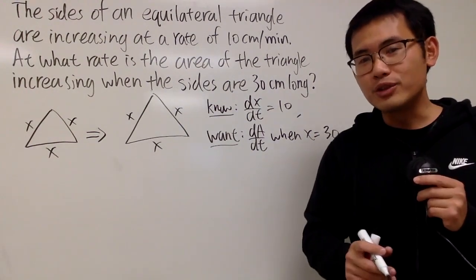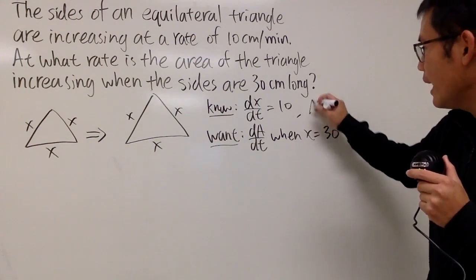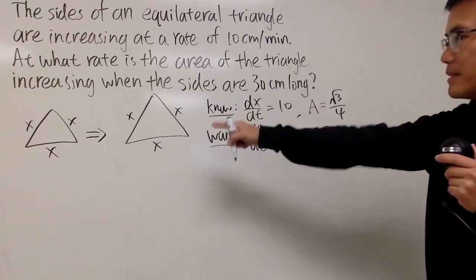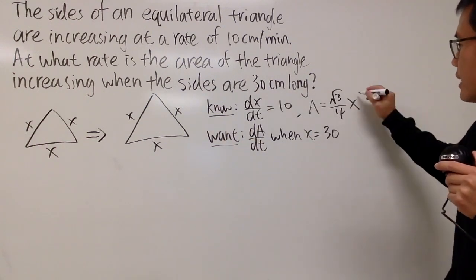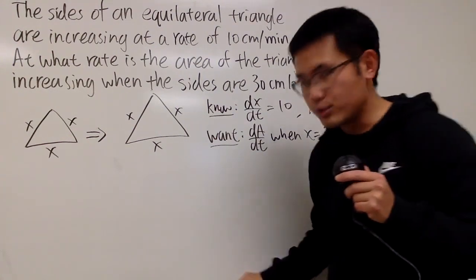And now we need an equation for the area of the equilateral triangle. Well, let me tell you, A is equal to square root of 3 over 4 times the side, which is X in our case, to the second power like this. And why is this true? Well, let's do a quick proof right here.